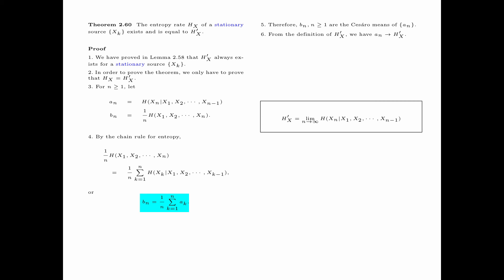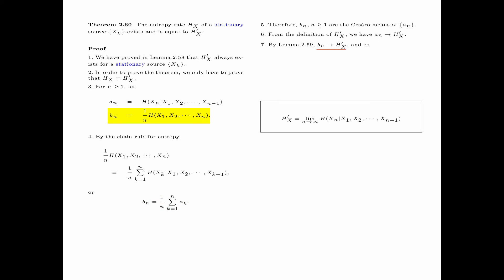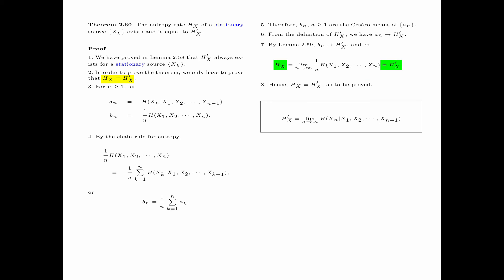Since a_n tends to H sub x prime, and by the Cesaro mean lemma the Cesaro means b_n also tend to H sub x prime, we have that b_n — which equals 1 over n times the entropy of x1, x2, up to xn — tends to H sub x prime as n goes to infinity. This limit, by definition, is equal to H sub x. Hence we have proved that H sub x, the entropy rate of the source x sub k, is equal to H sub x prime. This completes the proof of the theorem.